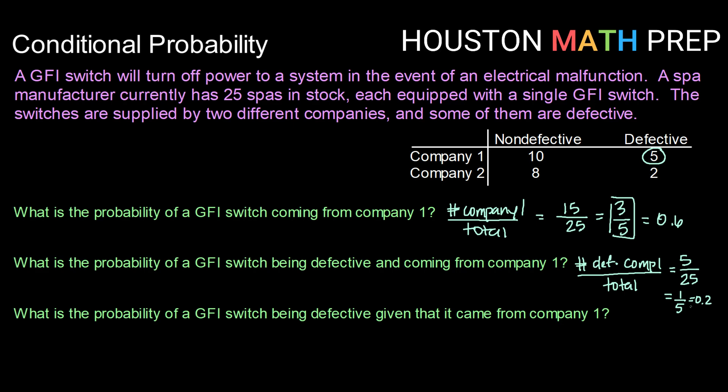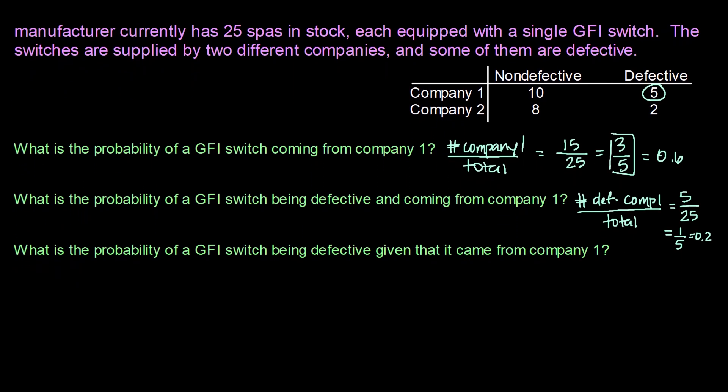Okay, and then finally, here's where we get into our conditional probability. So what is the probability of a GFI switch being defective given that it came from company 1? So if we know the switch's origin, can we tell what the probability of it being defective is? So this word given clues us in to the fact that we are doing a conditional probability. So the probability of defective given that it's coming from company 1. So that would be the probability of defective and coming from company 1 divided by the probability of coming from company 1.